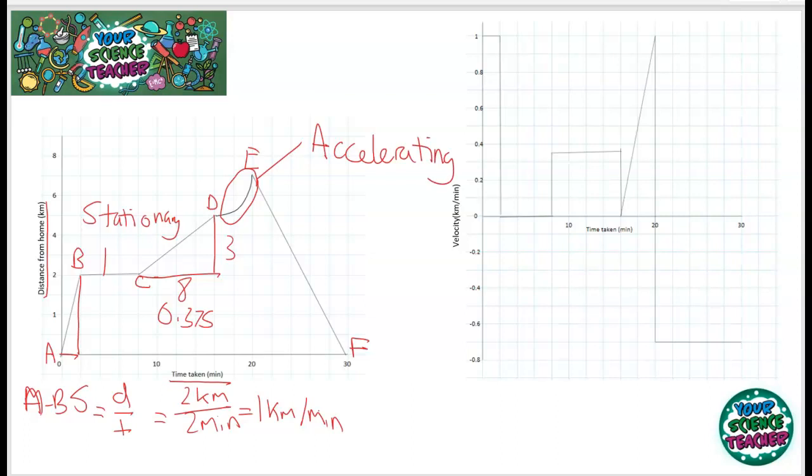Between E and F, what's occurring there? They are moving at a constant speed again; however, they are returning back to where they started because their distance from home goes all the way to zero kilometers. You can also work out the speed between that as well, and you can see that it's taking them 10 minutes in order to travel seven kilometers.